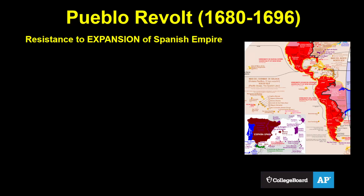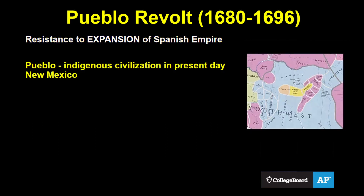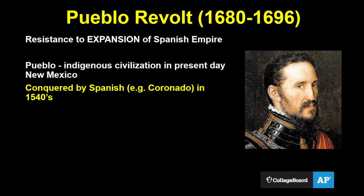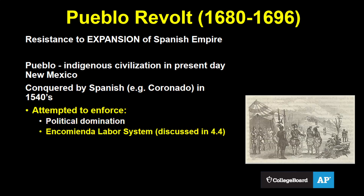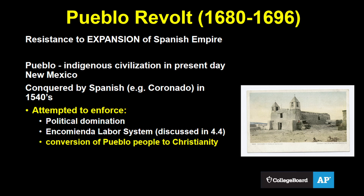Let's start with the Pueblo Revolt over in North America. This can be seen as resistance to state expansion, specifically the expansion of the Spanish Empire. The Pueblo are an indigenous civilization in present-day New Mexico, which at the time was in the far north of Spanish control in the Americas. Spanish conquistadors attempted to establish political domination, the encomienda labor system, and forced conversion to Christianity.